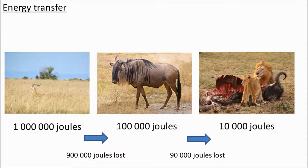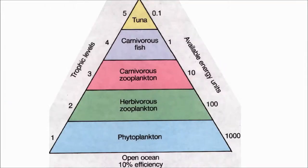You can show this in a pyramid of energy. At each trophic level — trophic means feeding — there is less energy.